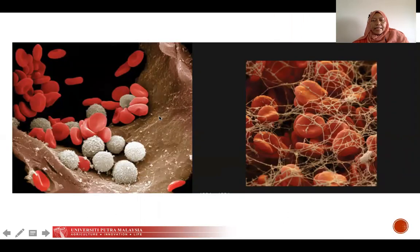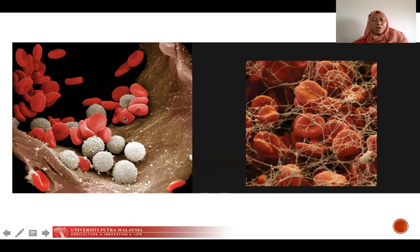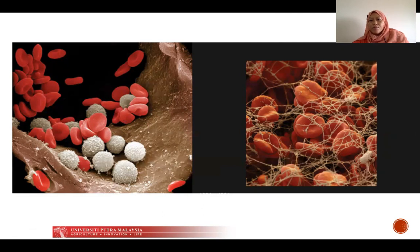These are the electron microscopy photographs of our blood cells. I'm sure this is familiar to you — the red blood cell, which is round and biconcave-shaped. It plays a very important function in oxygen delivery to our tissues for repair and for growth. The other picture shows how a blood clot looks like under electron microscopy and how important the red cells are to maintain hemostasis.